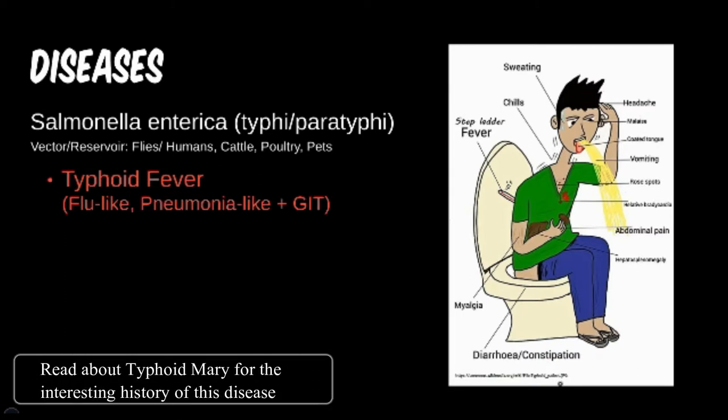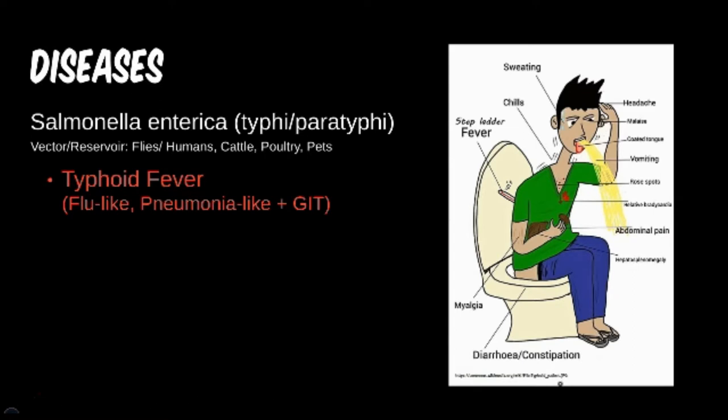Typhoid fever is not seen in industrialized nations very often, but be aware if patients are traveling to endemic areas. Common routes of infection can include foreign street vendors, undercooked meats, and vegetables washed with infected water.